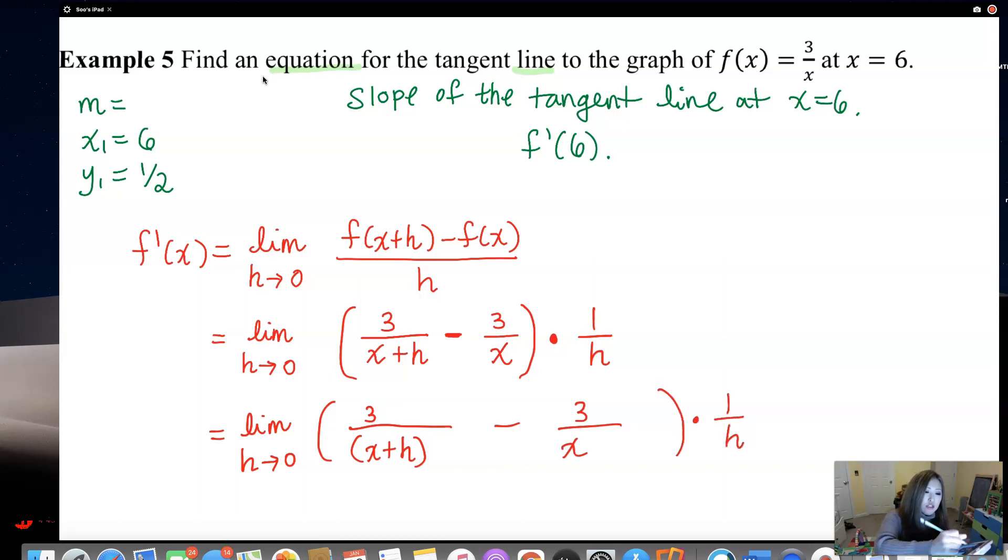So for the first fraction, I will multiply the top and bottom by x, because x is the denominator of the other fraction. x over x. And for the second fraction, which used to be 3 over x, I'm going to multiply the top and bottom by x plus h. Now they have a common denominator.